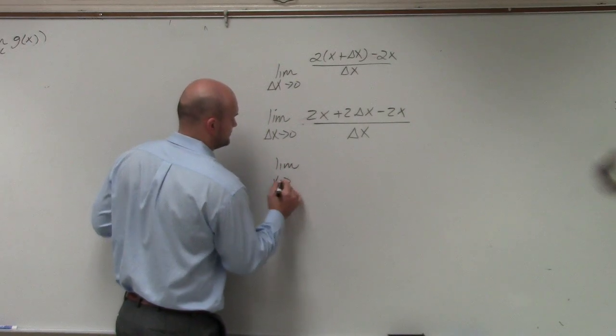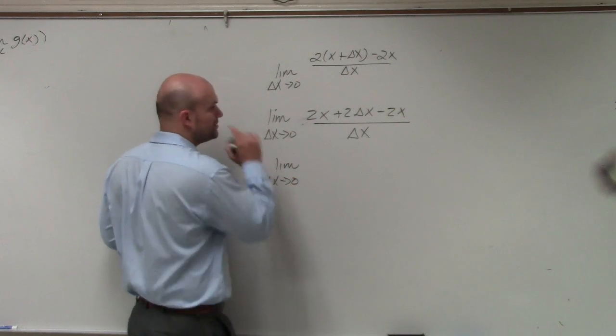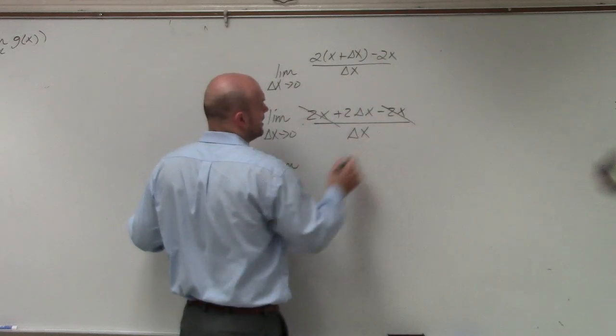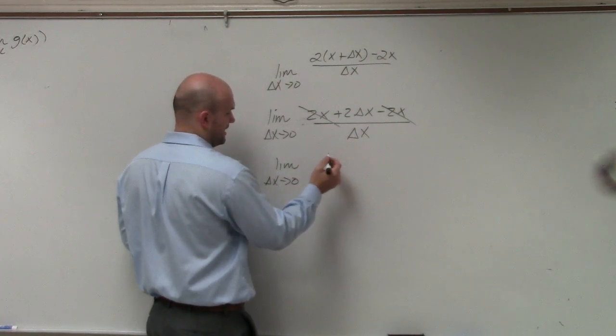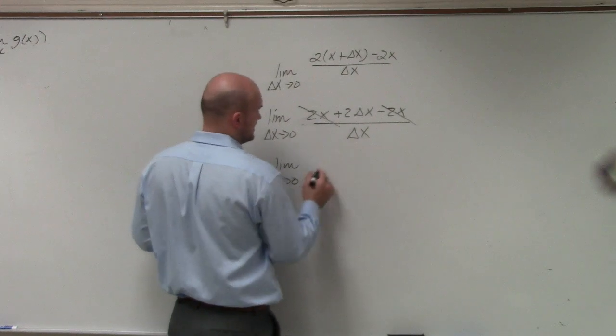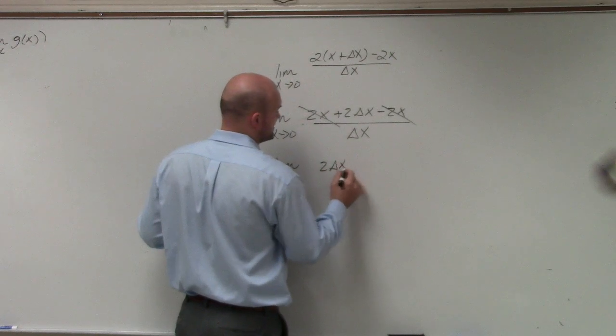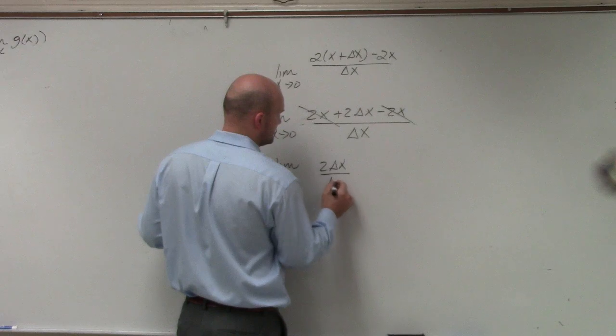So as delta x approaches zero, you guys can see that the 2x and the negative 2x do divide out, and you can also see, so that's going to leave us with 2 delta x over delta x.